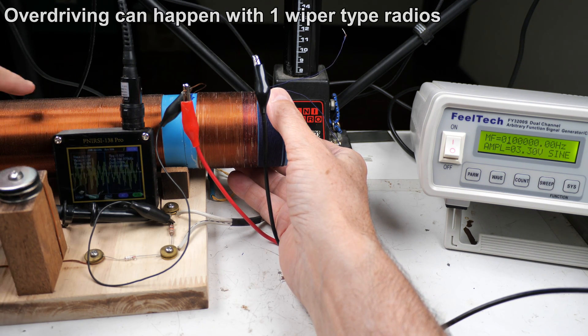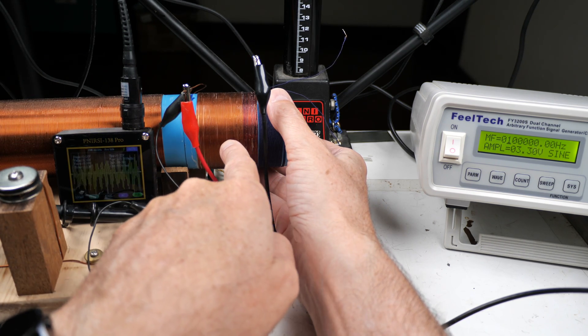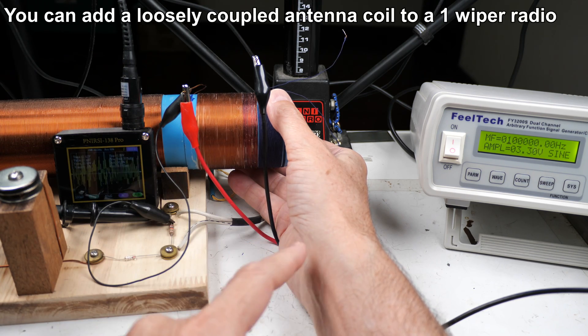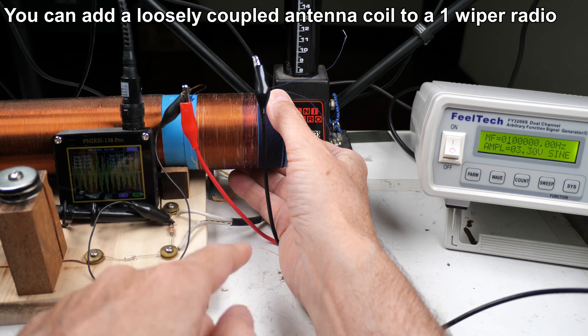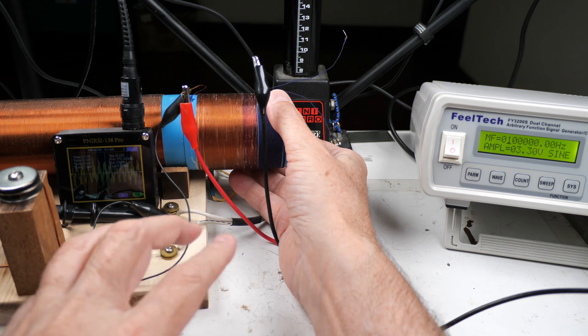So yeah, this is the difference between say a wiper single wiper radio and one that has either varying degrees of coupling on the antenna circuit. As you become more and more tightly coupled, you get this effect where it can just absolutely blow the circuit away.